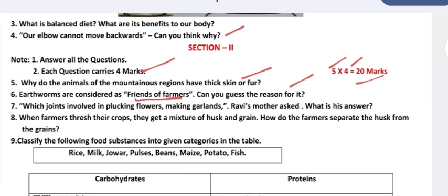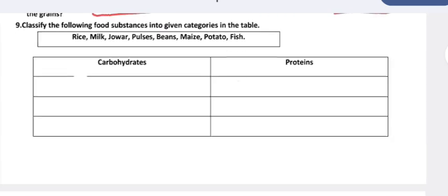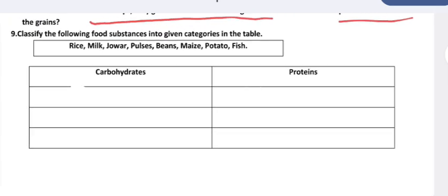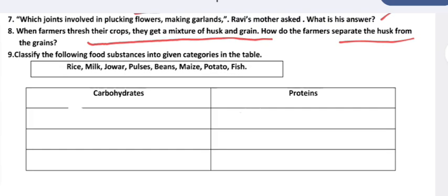When farmers thresh their crops, they get a mixture of husk and grain. How do the farmers separate them? Classify the following food substances into the given categories in the table: rice, milk, jowar, pulses, beans, maize, potato, fish.